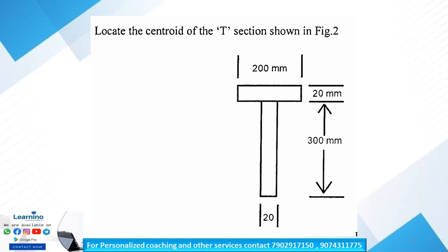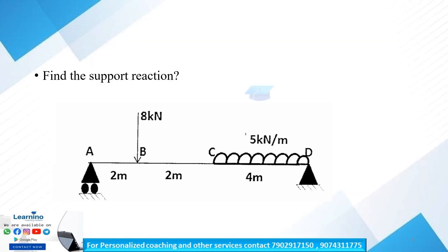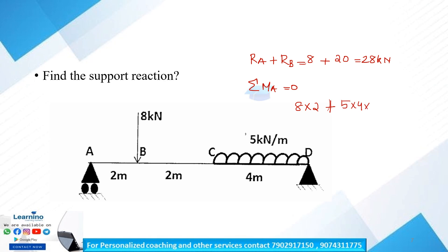The centroid formula is: x-bar = (A1·Y1 + A2·Y2) / (A1 + A2). Now I'm going to find the support reaction. This is the concept of UDL. If you have support reactions, and you have 8 kN plus 5 into 4 is 20, then 28 kN equals RA plus RB. The moment condition: moment equals 0.